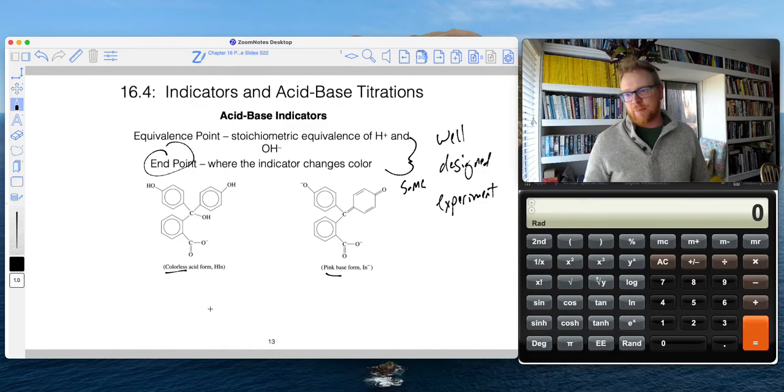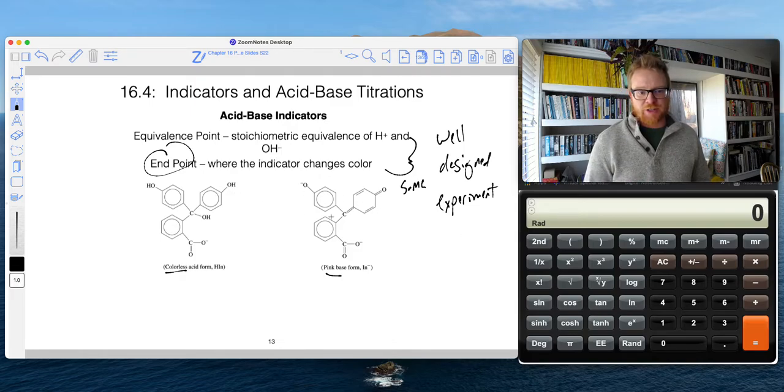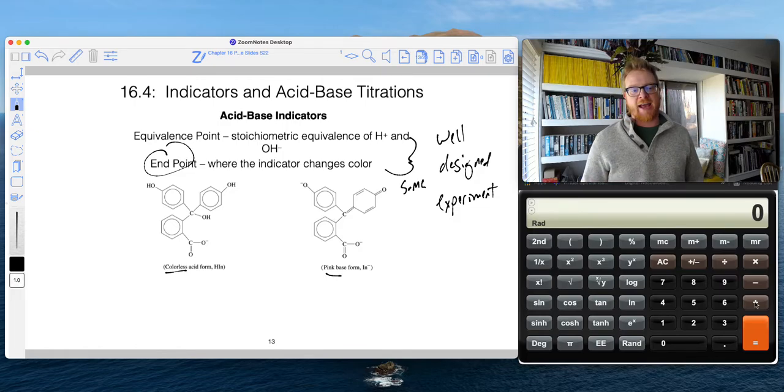So an indicator must also undergo proton transfer, either in the form of an acid or a proton acceptance in the form of a base. And that does give them this color change. So you can see like where there's a proton attached to this oxygen and no longer attached to that oxygen. And also the bonding structure can change as a result of that acid-base form.